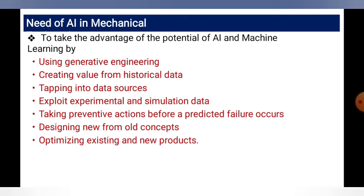Generative engineering means generating or creating new things with the help of AI — combining various data using AI and machine learning. Creating value from historical data means using multiple historical datasets — for example, from 1990, 1991, 1992, and 1994 — to create a new combination or technology in 2022. That is creating value from historical data.